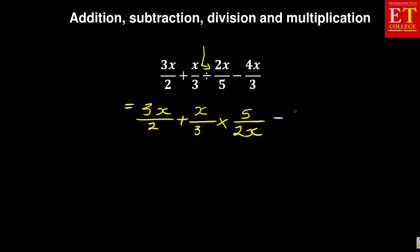If this continues, the x and the x will cancel here because it's multiplying now. So what you're going to have will be 3x over 2 plus 1. Remember there is a 1, 1 times 5 is actually 5 over 3 times 2 is 6 minus 4x over 3.